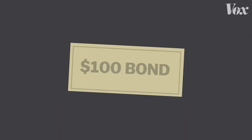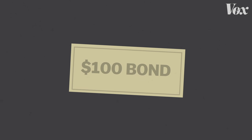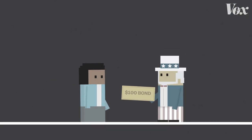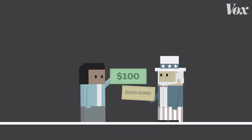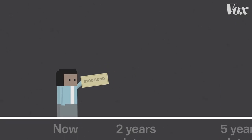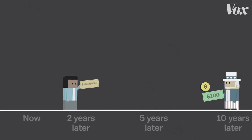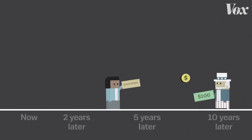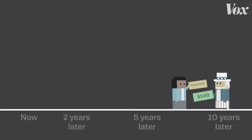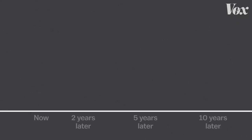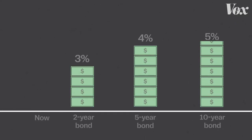It all starts with a U.S. Treasury bond. A bond is basically an agreement saying if you lend the federal government, say, $100, they'll pay you interest while they hold on to your money, until the date they agreed to pay you back. And the longer you let the government keep your money, the higher the interest rate, so you get more money.